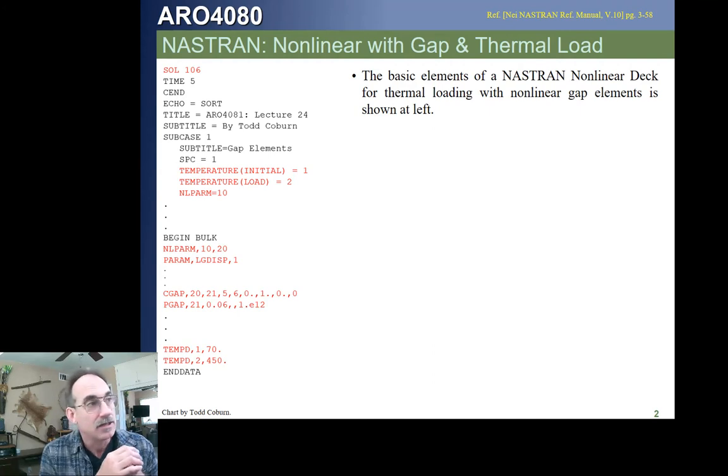Since we're running a non-linear solution, you're going to see that we're going to have all the same cards that we use for non-linear solutions like the 106 card, the NLPARM card, which identifies the ID of the NLPARM parameter later, the NLPARM parameter down in the bulk data, which tells how many iterations it's going to do,